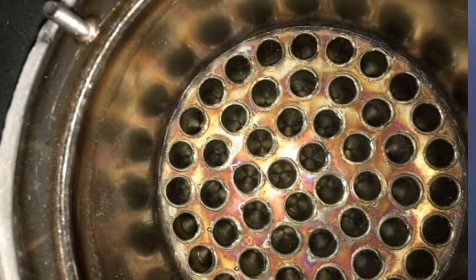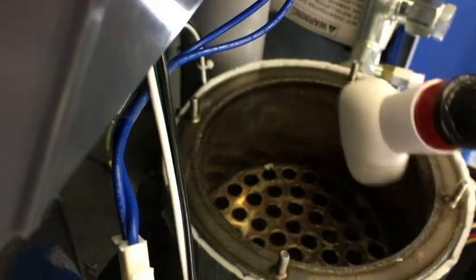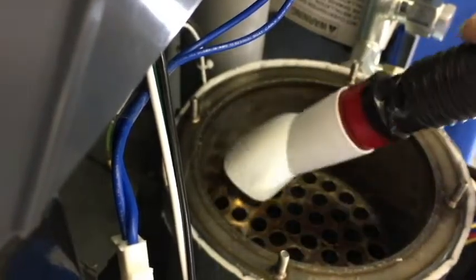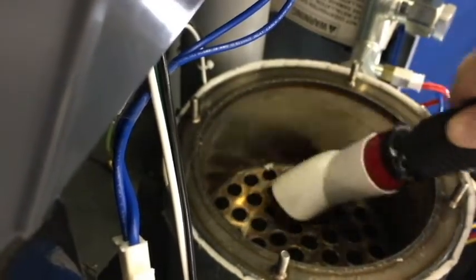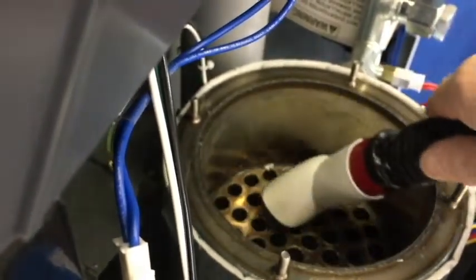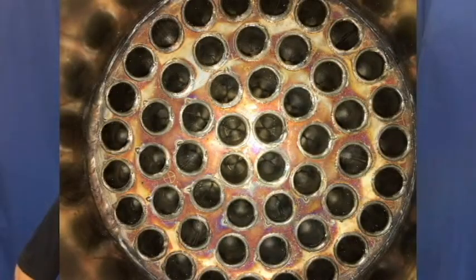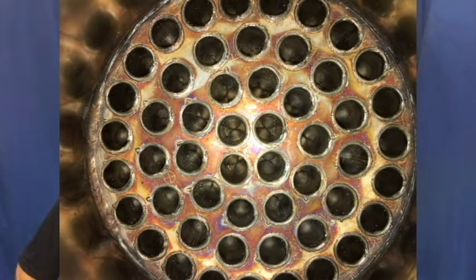If vacuuming does not remove all the debris, remove the control module then wash the heating surfaces with warm water and rinse with warm water. Never use any type of solvent or cleaner. Rinse the condensate trap with warm water.